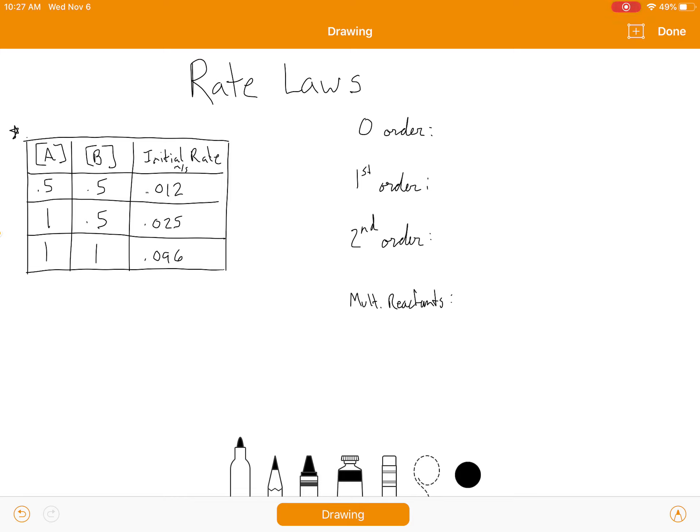So your normal rate law looks something like this. Rate is equal to the rate constant, k, times the concentration of something raised to its order. All right, the order shows the relationship between the concentration and the rate. It shows how the concentration affects how fast the reaction proceeds.